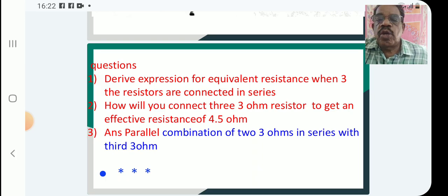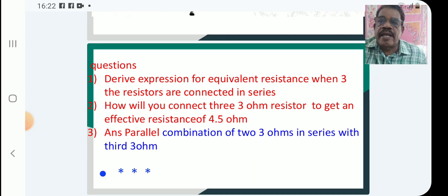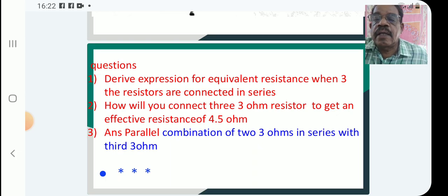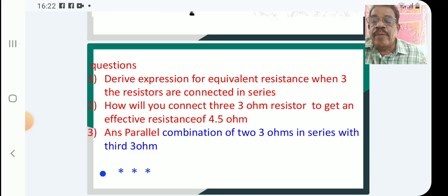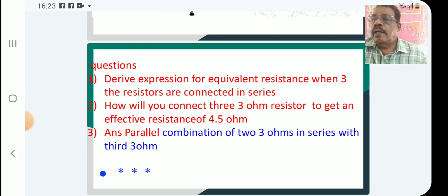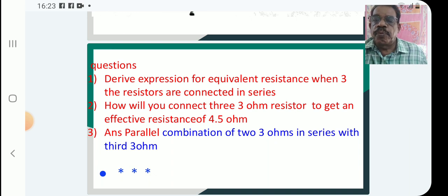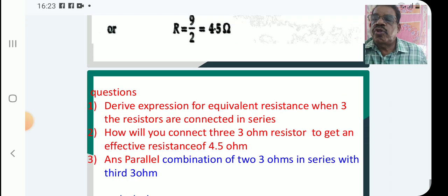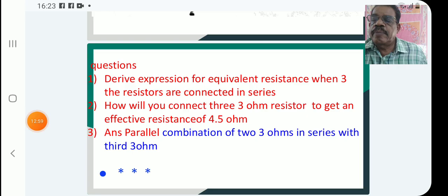Review questions: Number 1 — derive the expression for equivalent resistance when three resistors are connected in series. Number 2 — how will you connect three-ohm resistors to get an effective resistance of 4.5 ohm? Number 3 — how will you connect three-ohm resistors to get an effective resistance of 4.5 ohm?